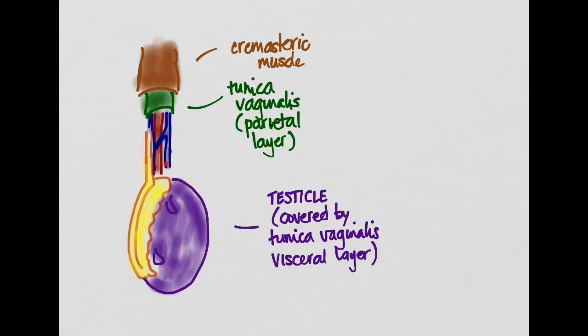So this here is called the pampiniform plexus, but just remember there's an artery, vein, and a vas running through here. This all is covered with the tunica vaginalis parietal layer, and all that is covered by the cremasteric muscle. So this is your normal anatomy now.